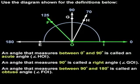So we can see that angle FOI, which measures 125 degrees, is an obtuse angle.